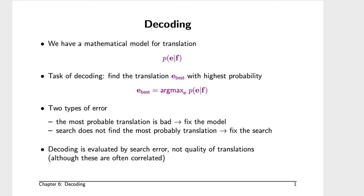Once we have a phrase table and a language model, we can perform decoding. Decoding is the term in statistical machine translation for actually applying the translation model — performing the translation. The decoder attempts to find the translation with the highest probability according to the translation and language model. It's possible that the most probable translation found is not a good translation, indicating the model should be updated. It's also possible that the search process fails to find the most probable translation, in which case the search process needs to be fixed.